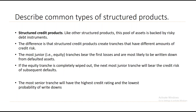Describing the common types of structured products: structured credit products are a pool of assets backed by risky debt instruments. The key difference is that structured credit products create tranches that have different amounts of credit risk — for example, senior, mezzanine, and junior tranches. Each tranche has different credit risk characteristics.